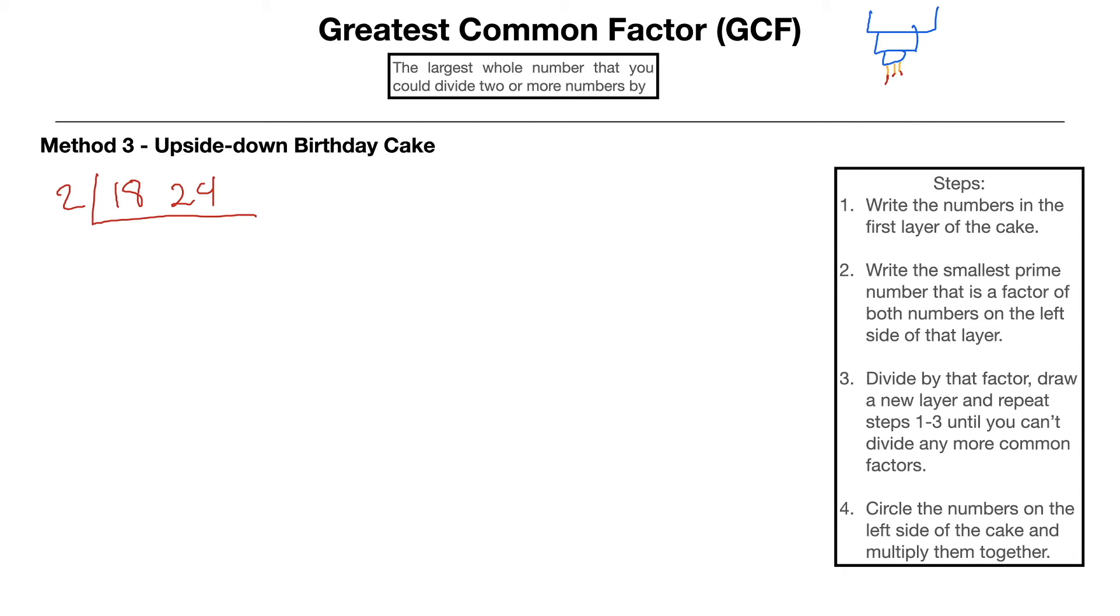Then step 3 tells us we're going to divide by that factor, draw a new layer, and repeat this process until we can't divide anymore. So 18 divided by 2 is 9, 24 divided by 2 is 12. I'm going to keep going. Can't divide them by 2, but I can divide them by 3. 9 divided by 3 is 3, 12 divided by 3 is 4.